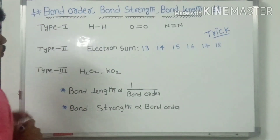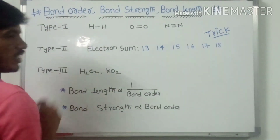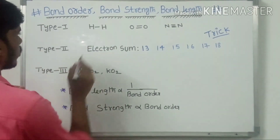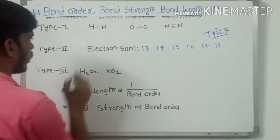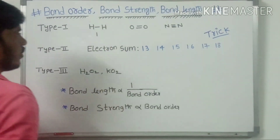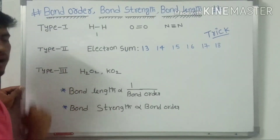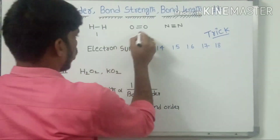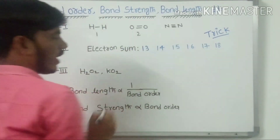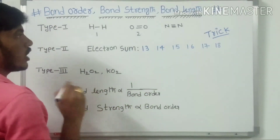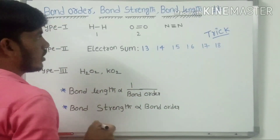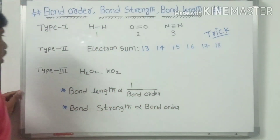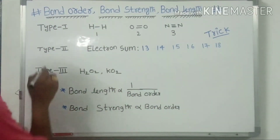Type 1: For the H₂O molecule, H and H have only a single bond, therefore the bond order for H₂O is 1. For the O₂ molecule, the bond order is 2. For N₂, which has a triple bond (N≡N), the bond order is 3 according to molecular orbital theory in chemical bonding.